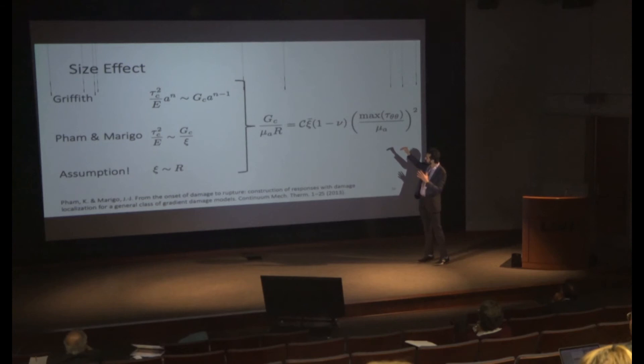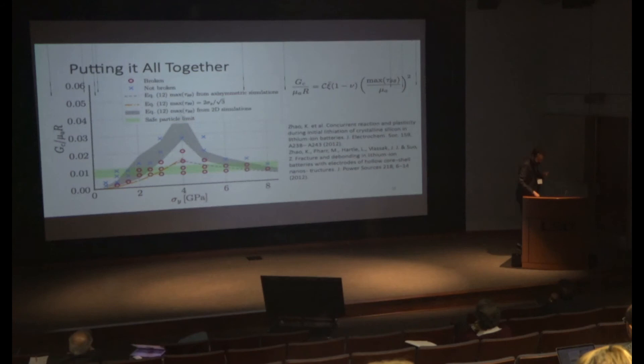I can put all that together and get a boundary. Based on what my ℓ/R is—that's my ℓ bar—I can tell you what is the minimum non-dimensional fracture toughness Gc/(μR) that I can get a crack at if I have a maximum σθθ. The crosses and circles are my 2D simulations, the gray area is what Marigo's calculation would tell us.